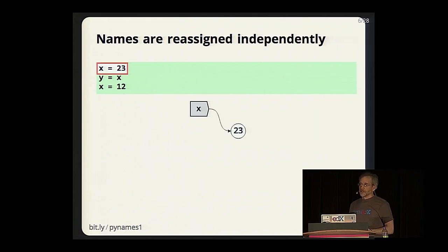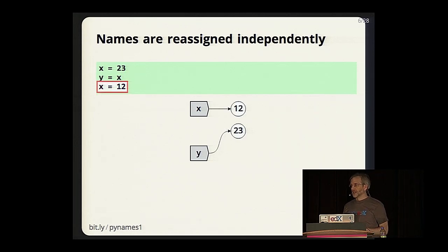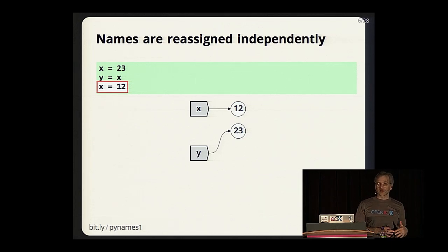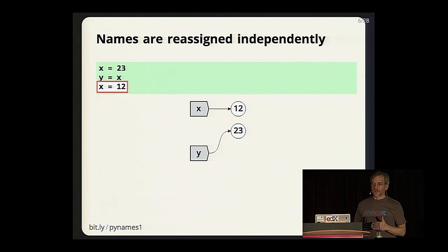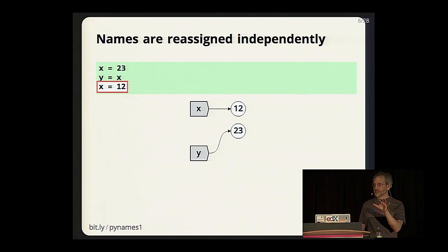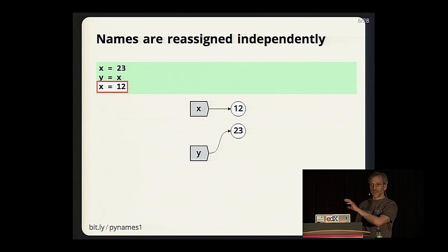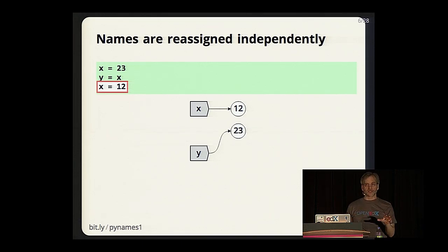Names are reassigned independently. If we have `x = 23` and say `y = x`, then `x = 12`, that makes x refer to 12—but y is still 23. Making x be 12 doesn't somehow make y also be 12. I know this seems very simple, but there will be a point later in this talk where this fact is going to be very important. You're going to remember this fact, and it's going to explain a thing that surprises lots of people.